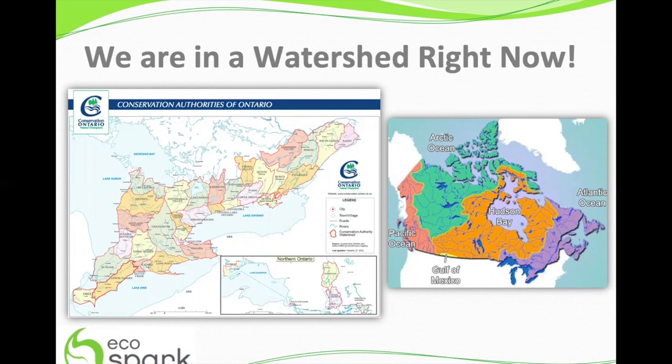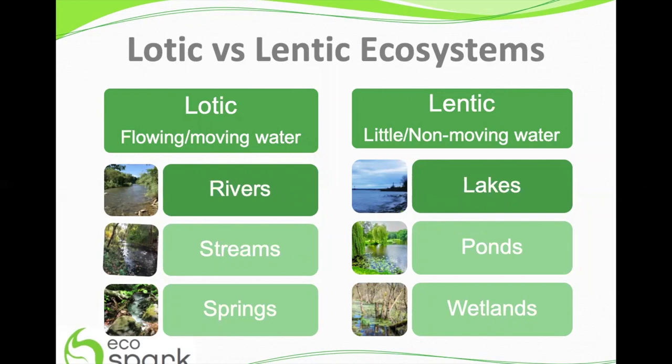Watersheds are an essential part of our lives and help maintain the health of our natural world. There are several different types of aquatic ecosystems that can be found within a watershed. We can break these down into two main categories: Lotic and Lentic. Lotic systems such as rivers, streams, and springs contain flowing or moving water, where Lentic systems such as lakes, ponds, or wetlands are systems with little to no water movement. Due to the lack of water flow, Lentic systems tend to be warmer than Lotic systems, and dissolved oxygen levels are generally lower, which can have a negative impact on aquatic life.